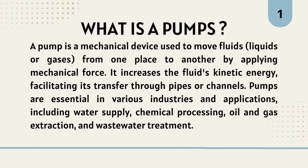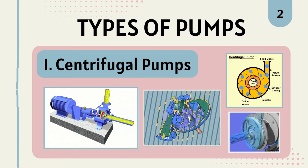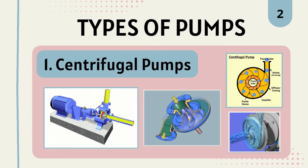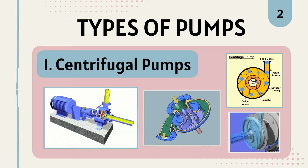In chemical industries, various types of pumps are used to handle different fluids, whether they are liquid or gas, corrosive or non-corrosive, viscous or non-viscous. The first type of pump which is worldwide used is the centrifugal pump. These pumps use centrifugal force to move fluid through a piping system and are suitable for transporting liquids with low viscosity. They are widely used for chemical processing, water treatment, and other industrial applications.